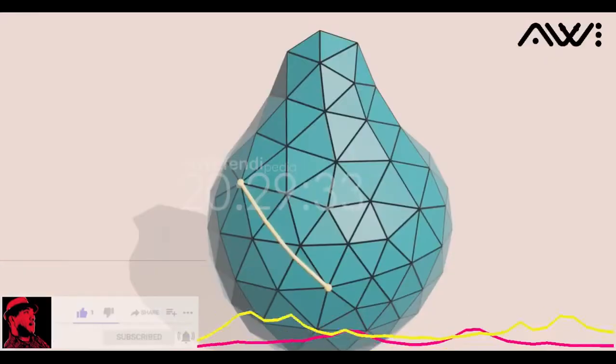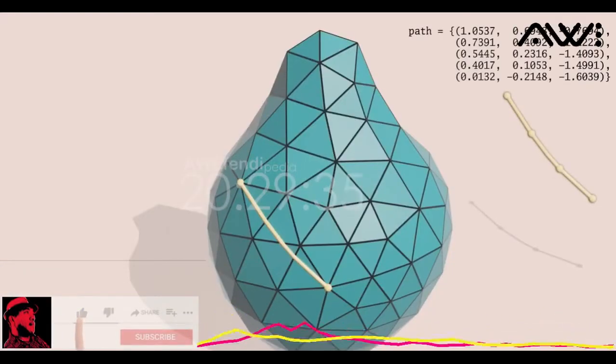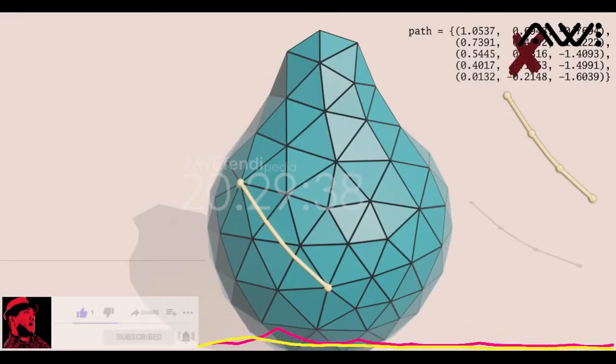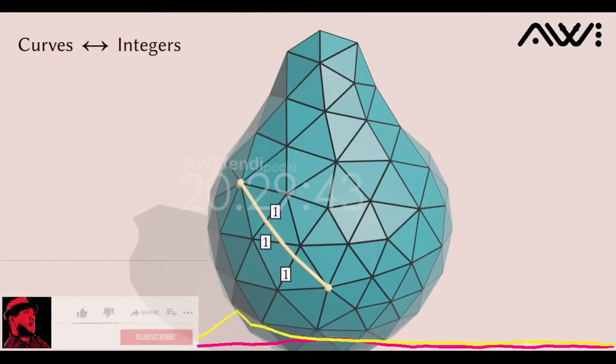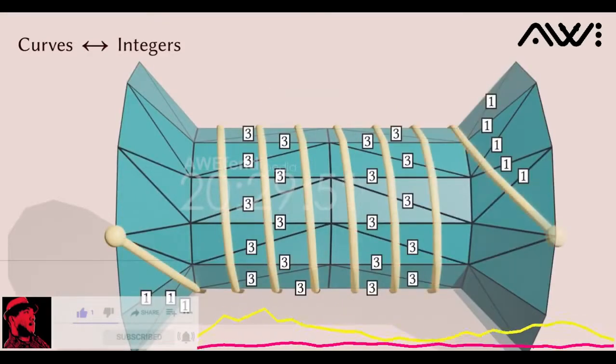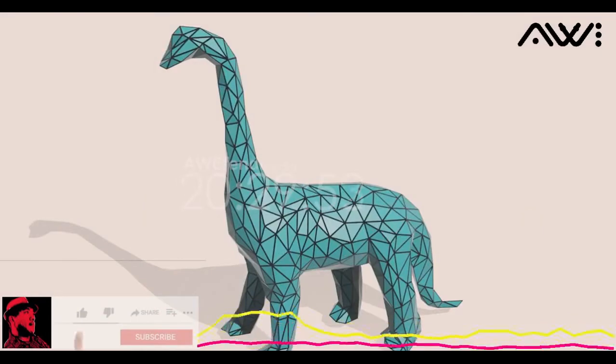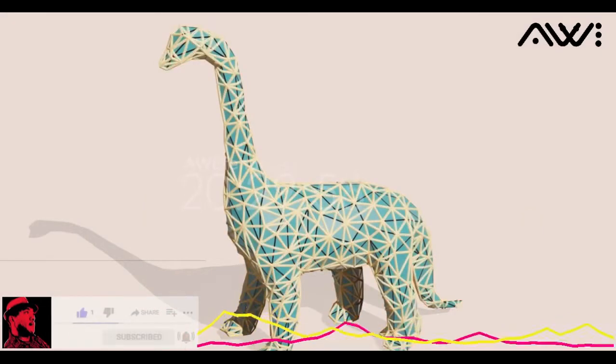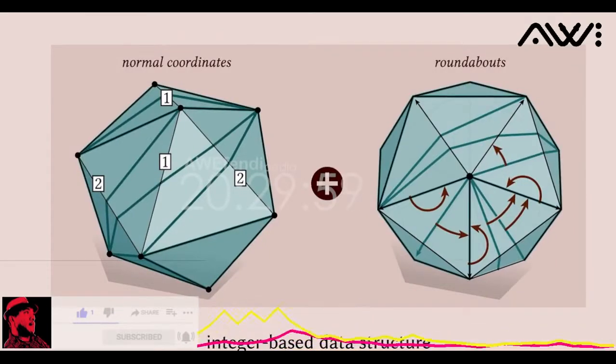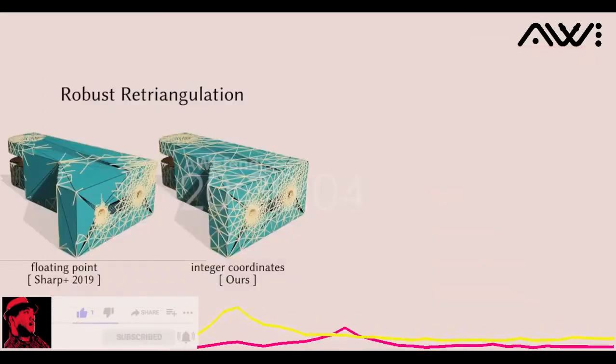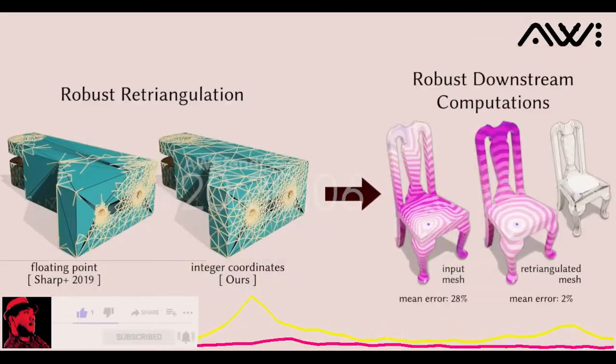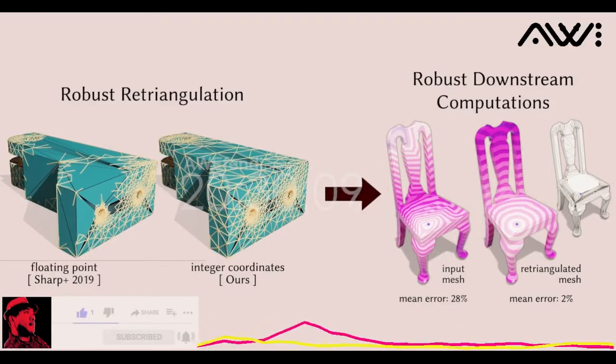How do you represent a curve along a surface? You could store this curve as a polyline in space, but this relies essentially on floating point. Geometric topology provides us with a better way. All we have to do is count how many times the curve crosses each edge of the mesh. Amazingly, these counts alone allow us to reconstruct the curve exactly. This strategy works even on very complicated curves. Moreover, we can represent a whole new triangulation sitting along the mesh in the same way. We use this simple idea to build a robust data structure for intrinsic mesh processing. Our data structure allows us to robustly retriangulate low-quality meshes, which in turn greatly improves the robustness of downstream algorithms, such as geodesic distance computation.